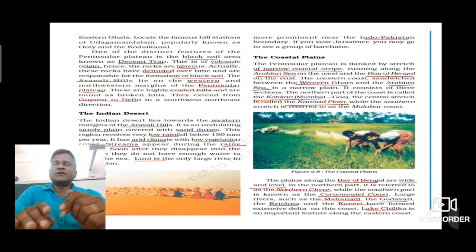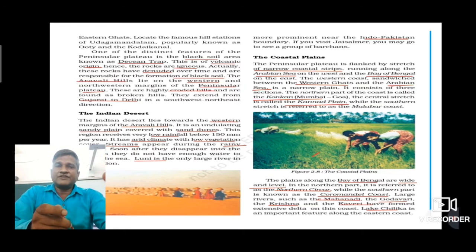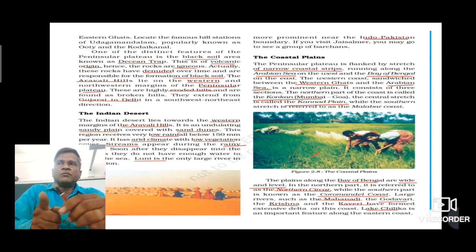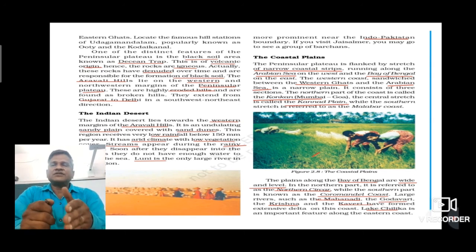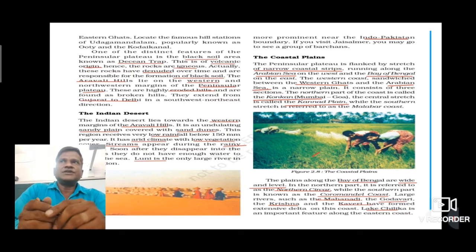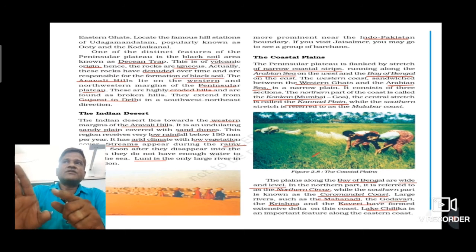Now we are going to discuss the Eastern Coastal Plain. The plain along the Bay of Bengal is wide and level in comparison to the coastal plain situated in the western part. In the northern part it is referred to as the Northern Circar, while the southern part is known as the Coromandel Coast. Here we have a large number of rivers like the Mahanadi — on which the Hirakud Dam is situated — Godavari, Krishna, and Kaveri. All these rivers, before their final destination of falling into the Bay of Bengal, form a large number of deltas.